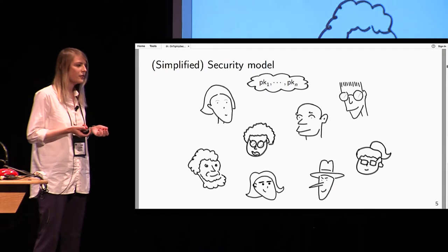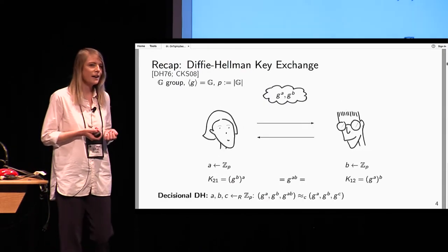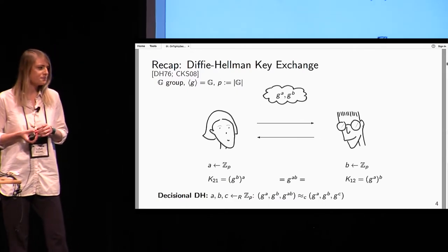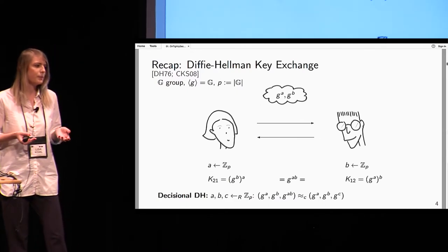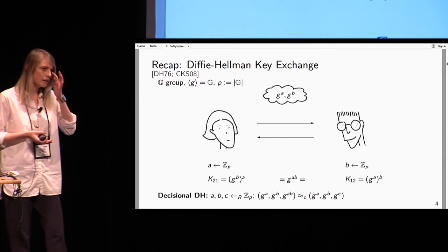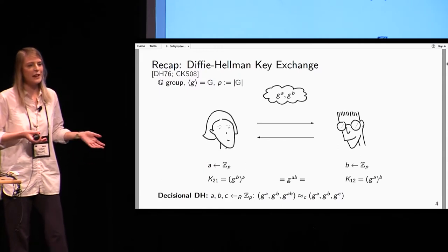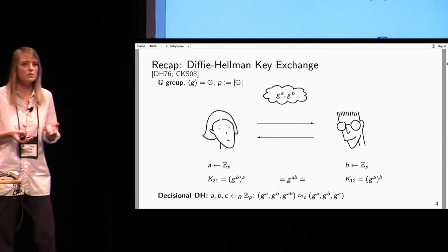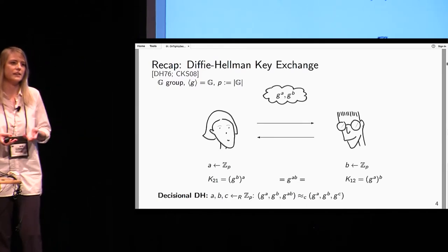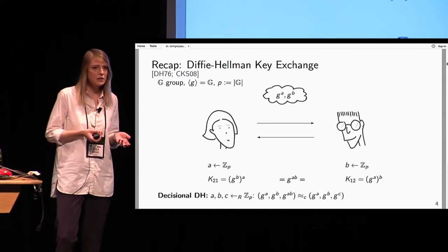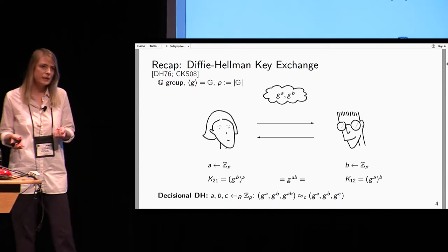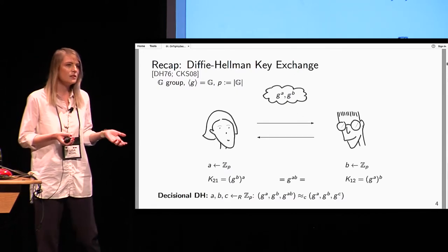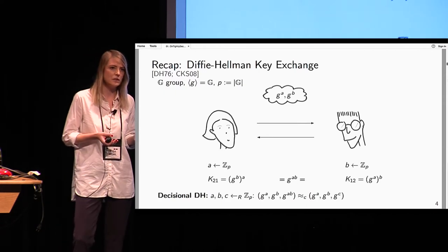I claim that every one of you knows a NIKE, namely the Diffie-Hellman key exchange. Alice and Bob can each choose a scalar and publish the group element g to that scalar, and the shared key will just be g^{ab} where a and b are the exponents Alice and Bob choose. We have security from the decisional Diffie-Hellman assumption, which states that given g^a and g^b, g^{ab} looks like a random group element g^c.